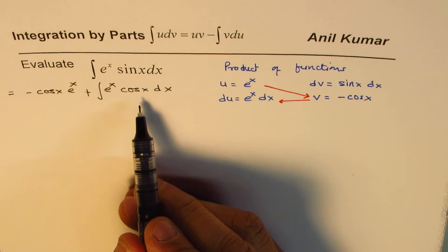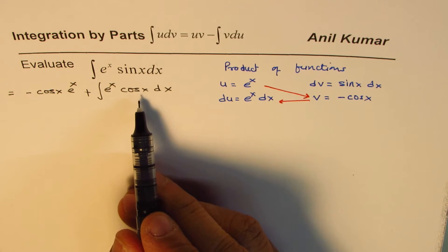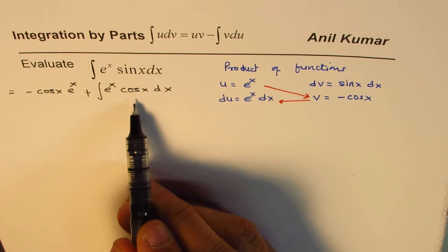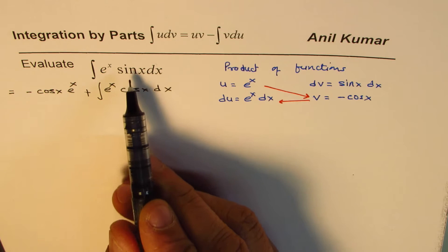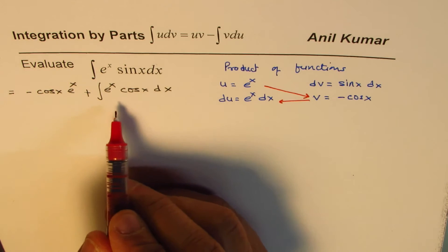Now, that really didn't help us much. Instead of sine, we got cosine. But what you observe here is that if we do one more step, then cosine will get converted to sine, and then we can actually do some algebraic operation and solve it. So let's look into the second integral now.